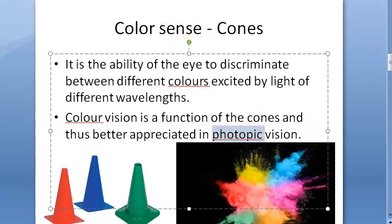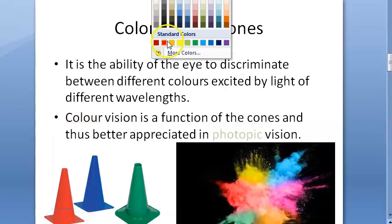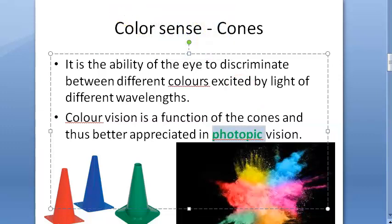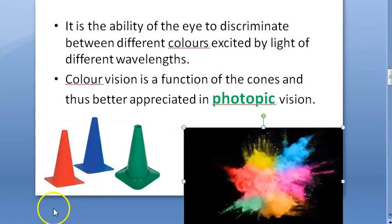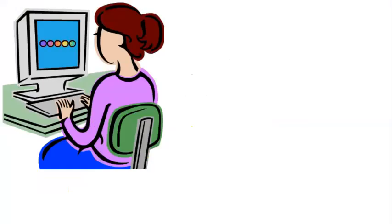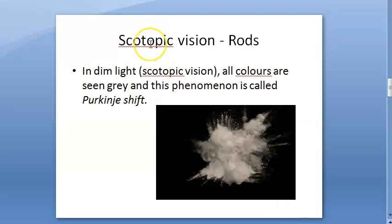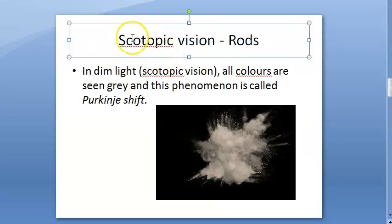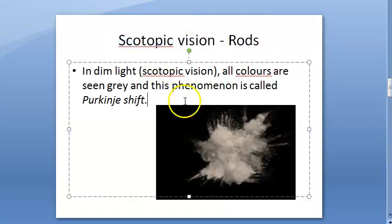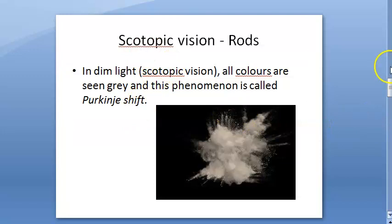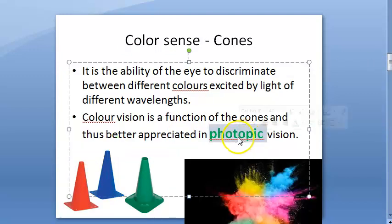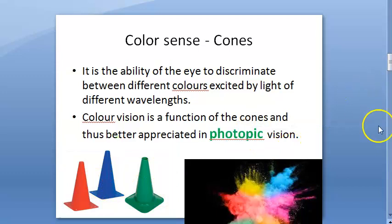This is called photopic vision - remember that word. So we have photopic vision which gives us color perception. What are the rods doing? In the retina, rods help us see in dim light - that is called scotopic vision. But here we are focused on photopic vision, which is given to us by the cones.